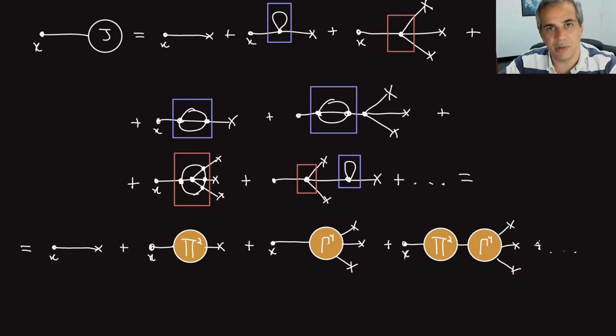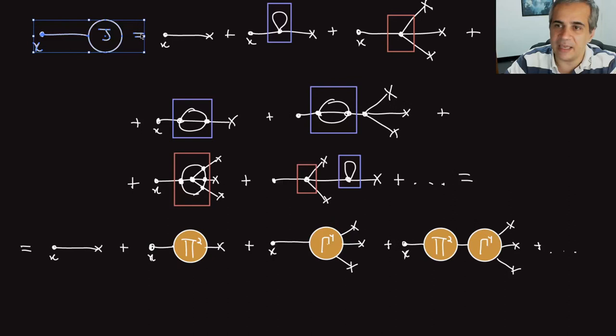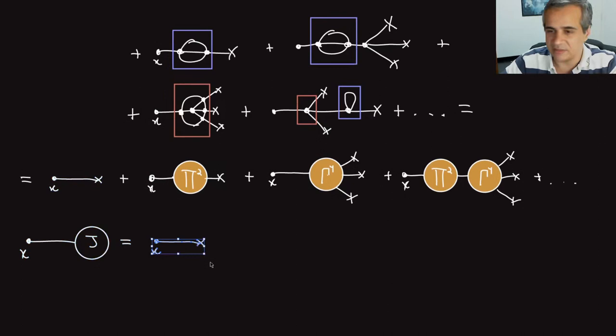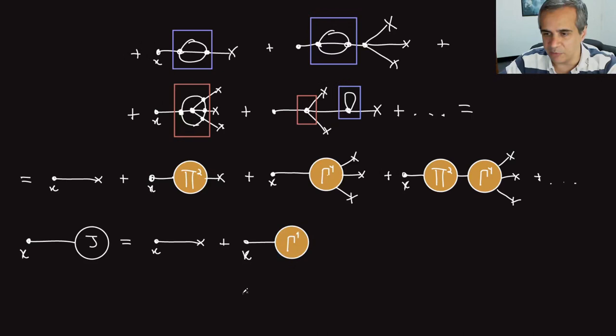I want to reorganize this sum for the classical field in terms of 1PI contributions for general theories, not just lambda phi 4. For general theories, I can define gamma_1 (1PI one-point), gamma_2 (1PI two-point), gamma_3 (1PI three-point), gamma_4 (1PI four-point), and so on. For lambda phi 4, all odd gamma functions are zero; for lambda phi 3, all even ones are zero. In general, these depend on which interaction is present.